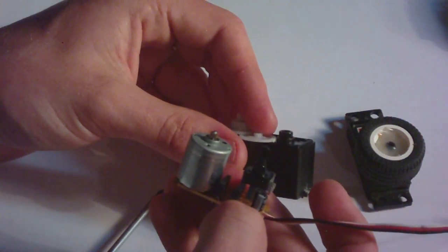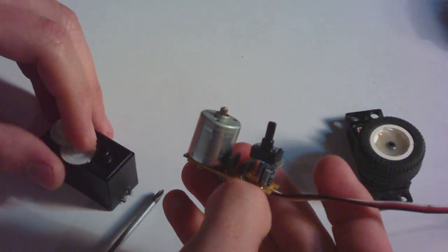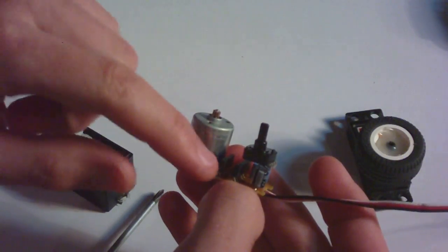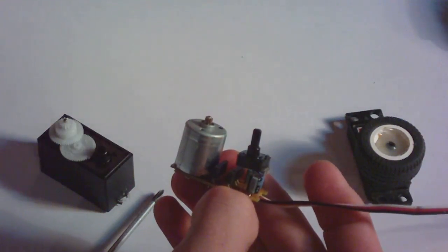As you can see, it is still intact. If I would like to have my old servo back, I would just push up the variable resistor again, attach it to the wheel, and I would have back my standard servo.